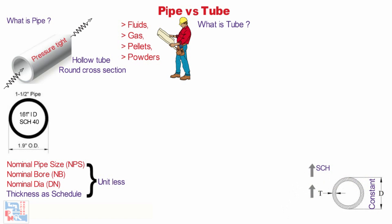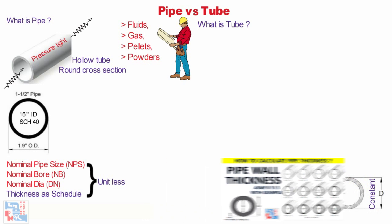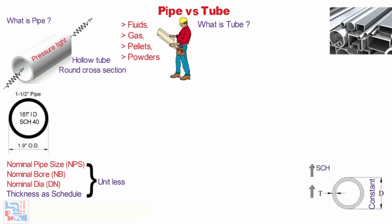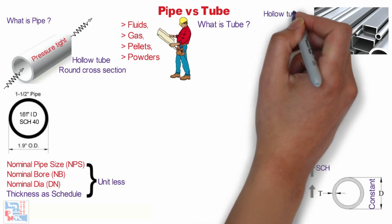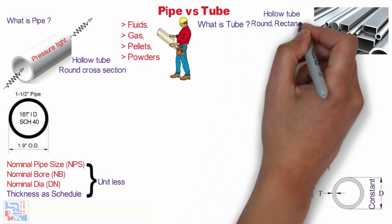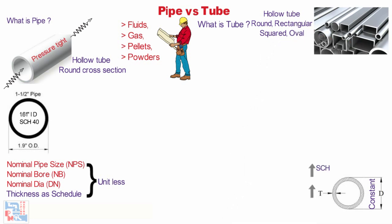You must see our video on thickness calculation where we have explained NPS and schedule in detail and how to calculate thickness with an example. Now we will quickly see what a tube is. A tube is also hollow but available in round, rectangular, squared, or oval cross-sections.